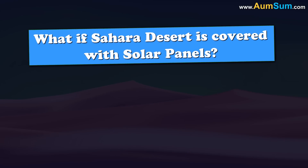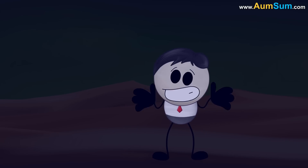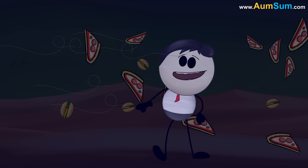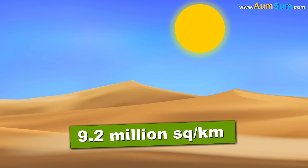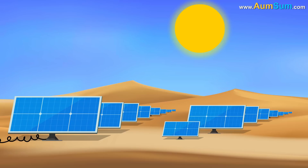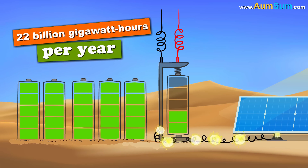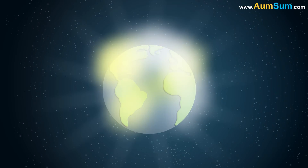What if the Sahara Desert is covered with solar panels? The Sahara Desert is around 9.2 million square kilometers in area. Based on this, it can be estimated that the total energy produced by the solar panels would be approximately 22 billion gigawatt hours per year — thousands of times our current electricity requirement.